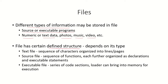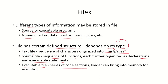Every file has a defined structure which depends upon the type of the file. A text file will have a sequence of characters organized as lines, and multiple lines organized as pages. A source file will have a sequence of functions, each organized as declarations followed by executable statements. An executable file will have multiple series of code sections that the loader can bring into memory for execution. So the structure of the file depends upon its type.